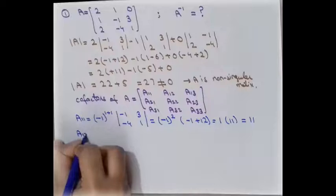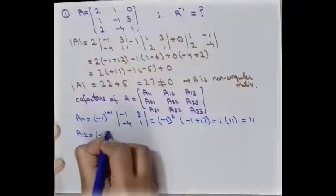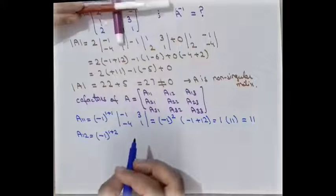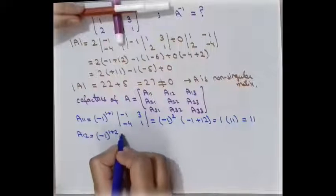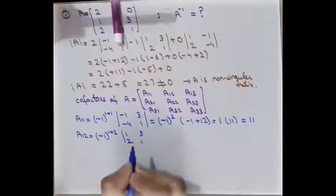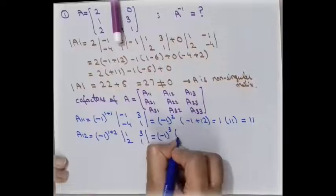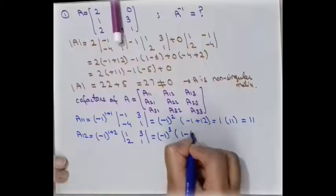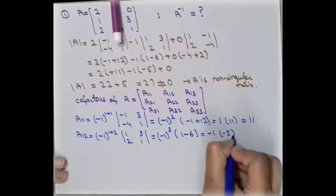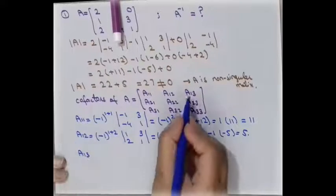To calculate A12, using the formula with i+j = 1+2 = 3, we remove the corresponding row and column, leaving four elements: 1, 3, 2, 1. Solving this: (-1)^3 × (1 - 6) = -1 × (-5) = 5. So A12 = 5.